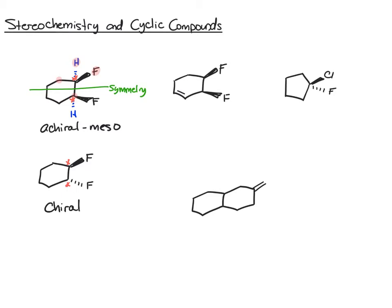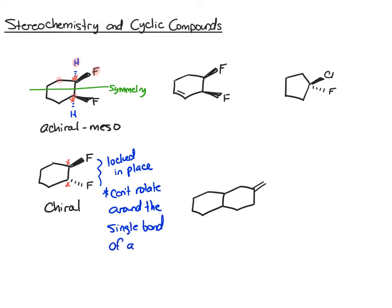The other thing to keep in mind is that rings are kind of like double bonds because they actually lock these groups in place — you can't rotate around the ring. This single bond here, you cannot rotate around it. If you have trouble visualizing that, build a molecular model and try to rotate it — you won't be able to.